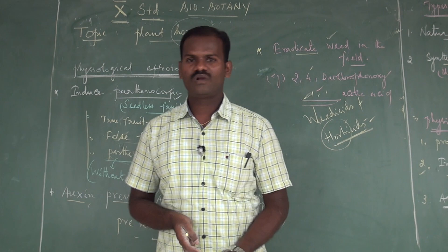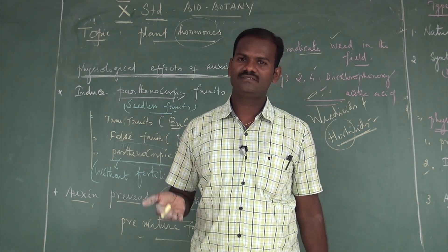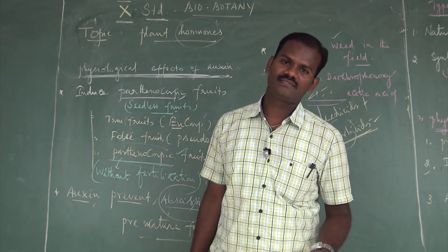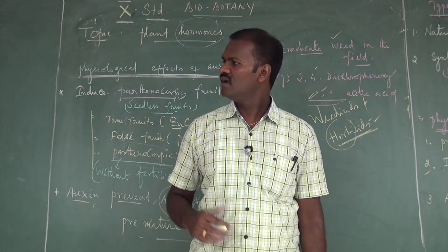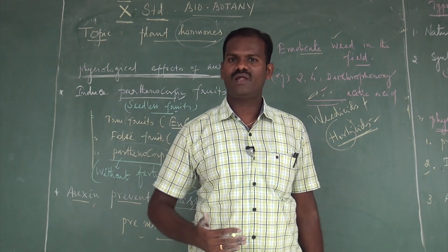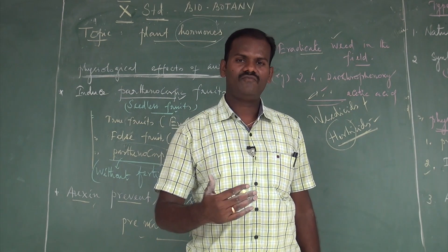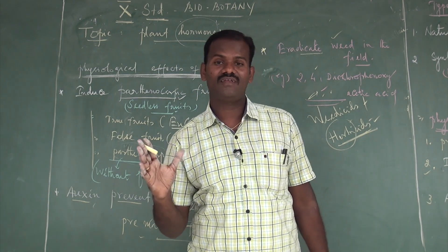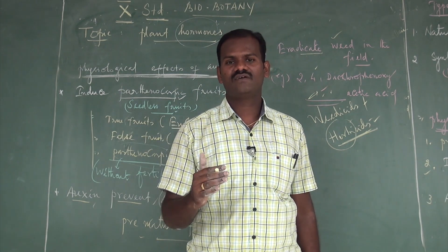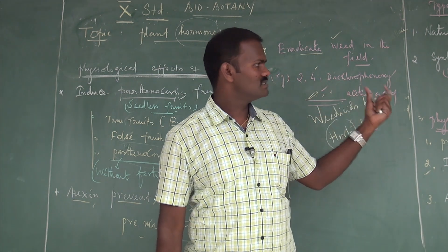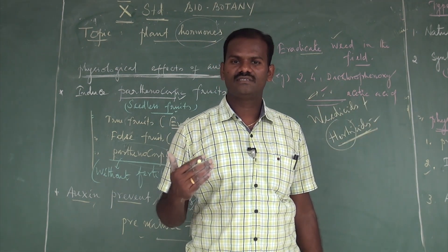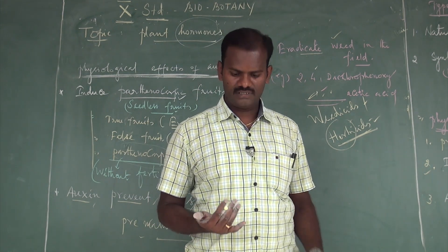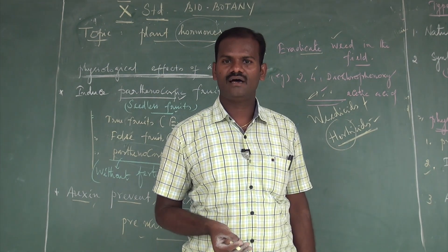To conclude today's lesson: plant hormones are chemical substances synthesized by plants themselves, broadly classified into five groups — auxin, gibberellin, cytokinin, ethylene, and abscisic acid. Auxin is the first plant hormone to be discovered. We discussed its synthesis sites, effects, who first discovered it, and its various physiological roles. In the next videos, we will discuss the other four plant hormones: cytokinin, gibberellin, abscisic acid, and ethylene.